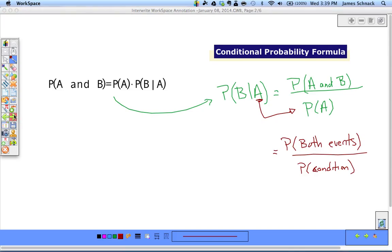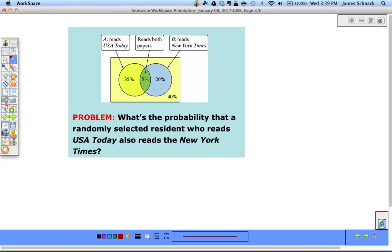Let's solve a problem. What's the probability that a randomly selected resident who reads USA Today will also be reading the New York Times? We're going to use our Venn diagram and apply our conditional probability formula. Let's translate this problem into a probability statement: probability that they read the New York Times given that they read USA Today. So B given A.